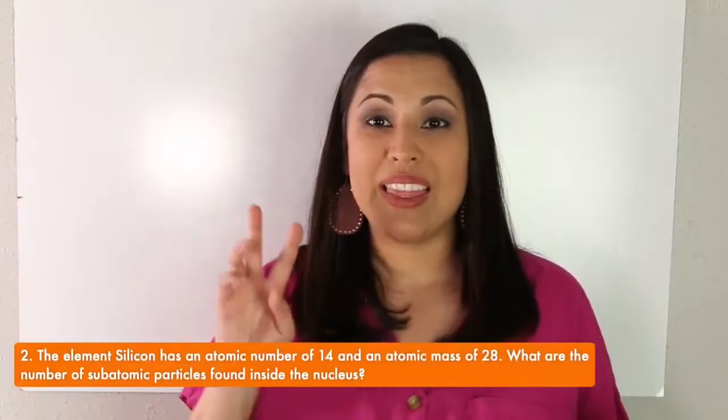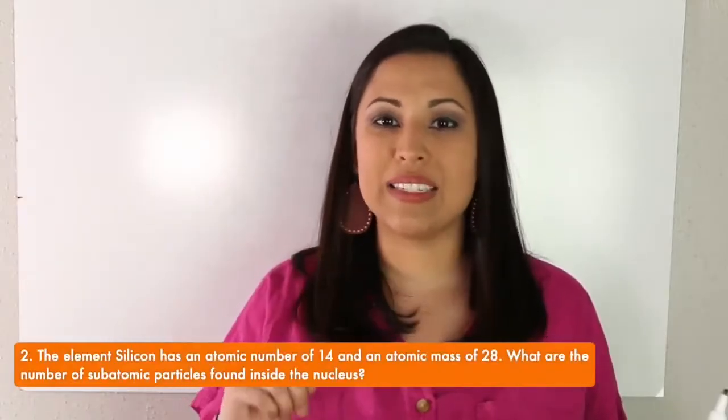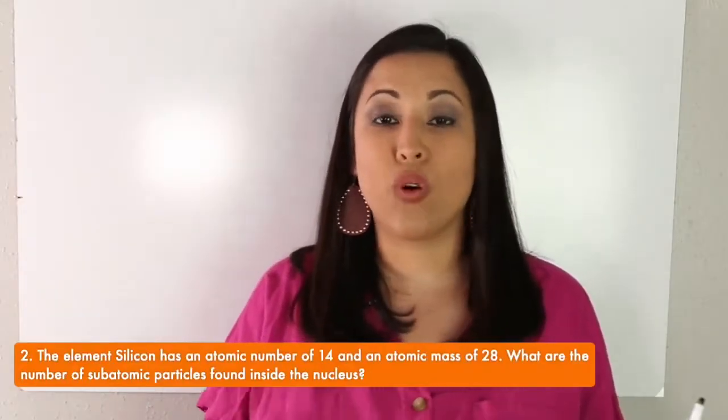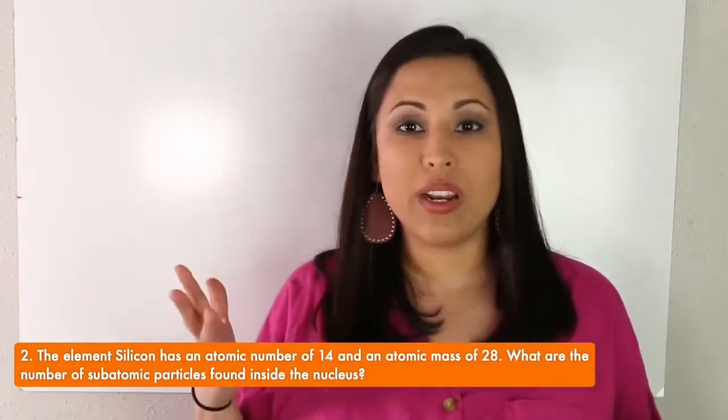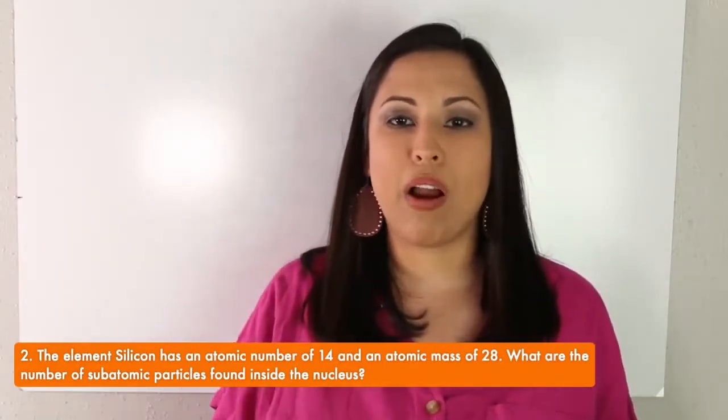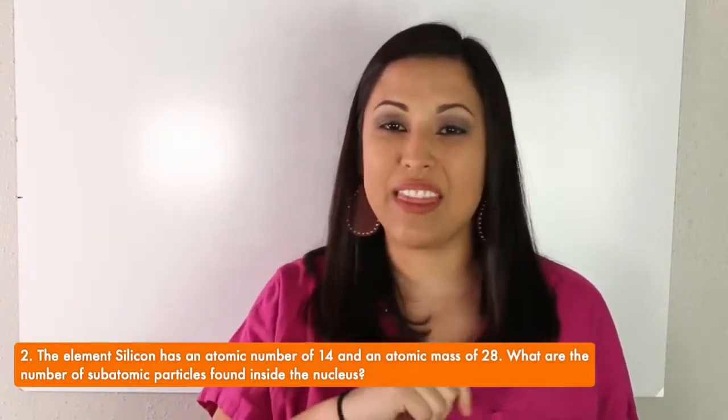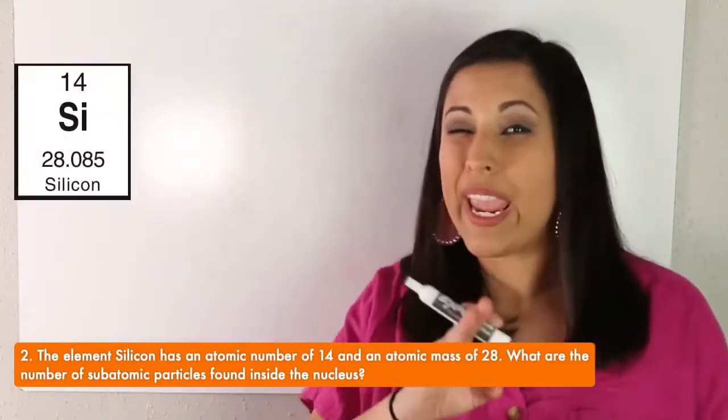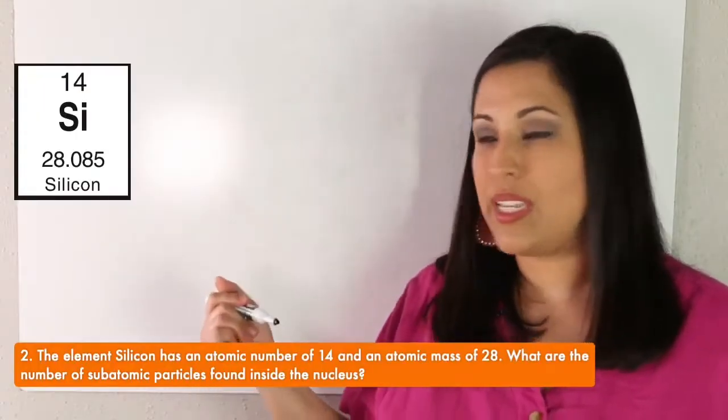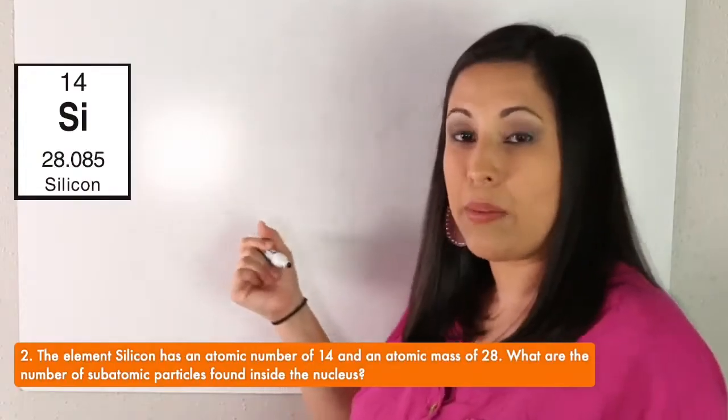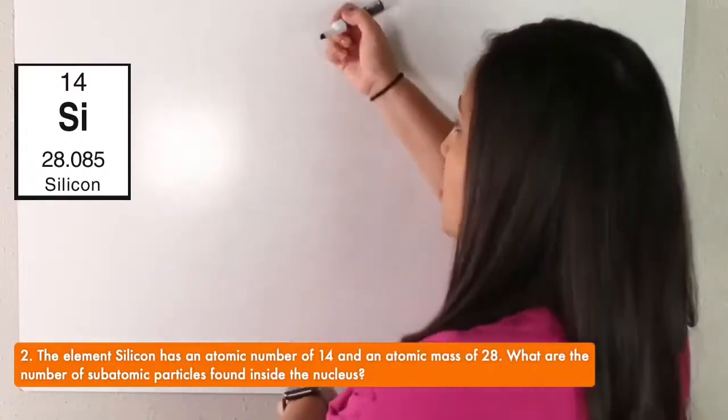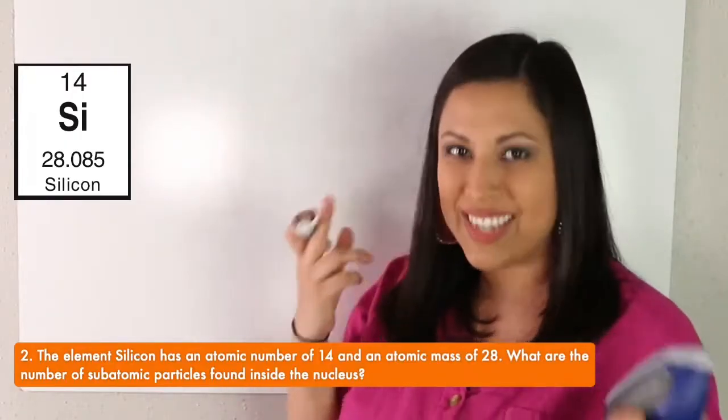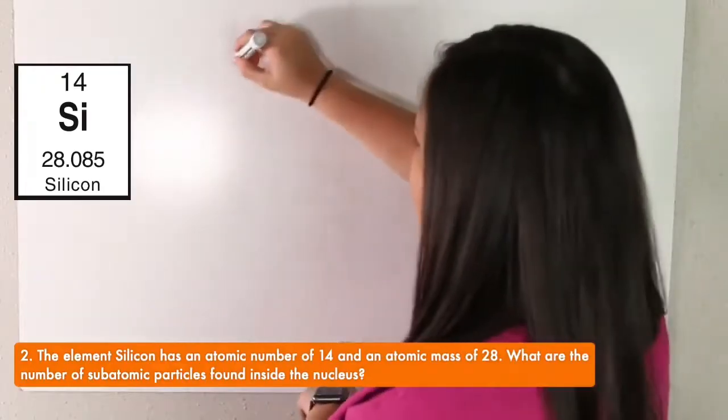Question number two. The element silicon has an atomic number of 14 and atomic mass of 28. What are the number of subatomic particles found inside the nucleus? So we can find this on the periodic table and we would see silicon on the periodic table is atomic number 14. So what are we going to do? Ape man to the rescue.